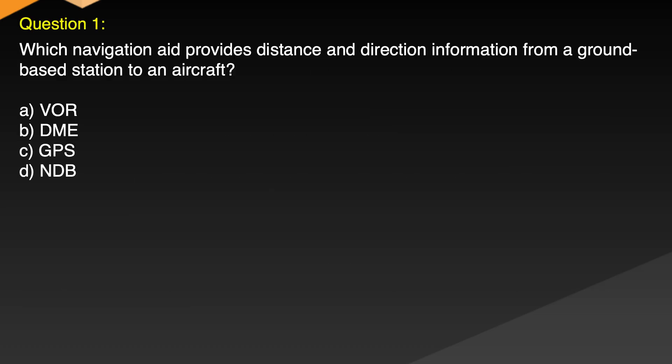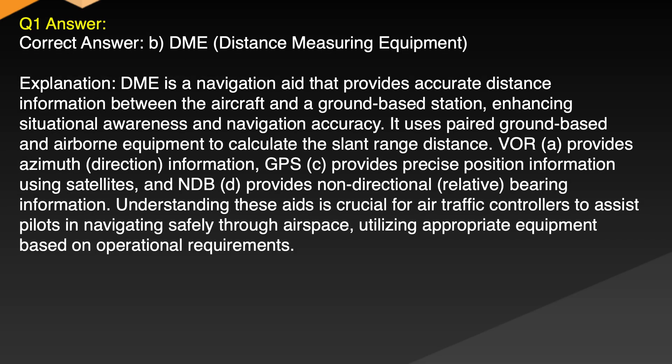Question 1. Which navigation aid provides distance and direction information from a ground-based station to an aircraft? A. VOR, B. DME, C. GPS, D. NDB. Correct answer: B. DME, Distance Measuring Equipment.